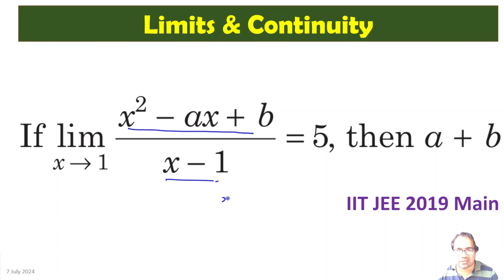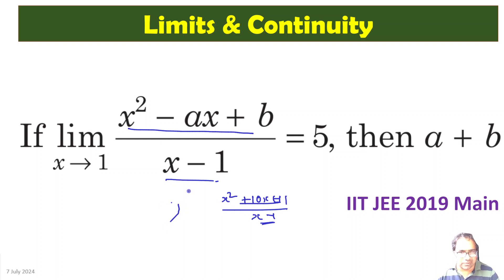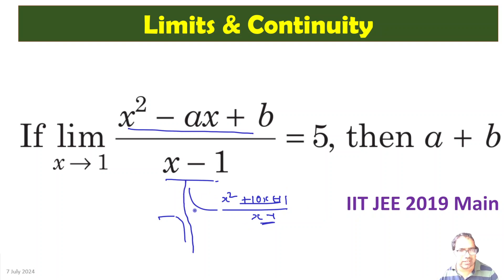Otherwise, what will happen? For example, if we have something like (x² + 10x + 11) / (x - 1), and x - 1 is not a factor of the numerator, then there will be a vertical asymptote. When x equals 1, if you approach from one side it will be negative, and from the other side it will be positive, so one side it will tend to plus infinity and the other side to minus infinity.